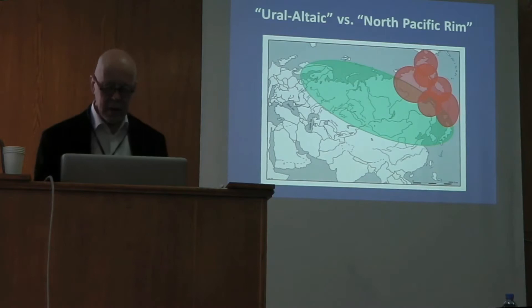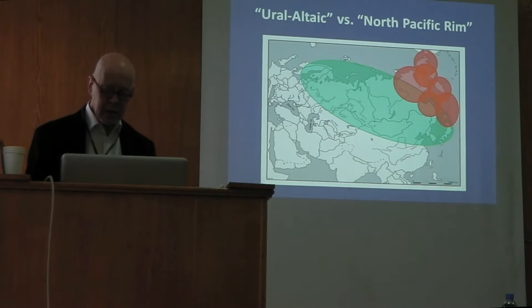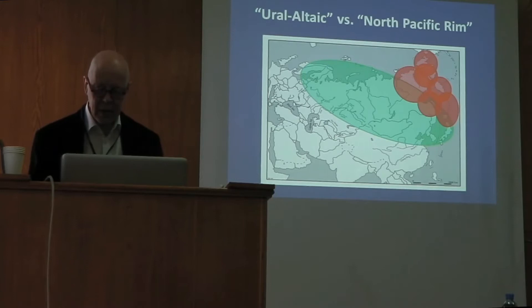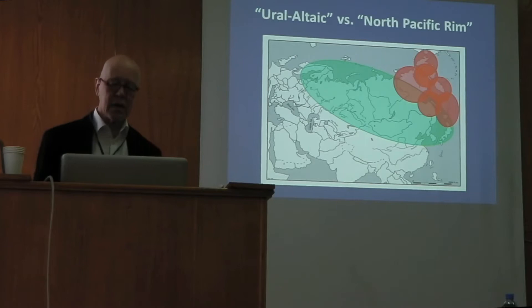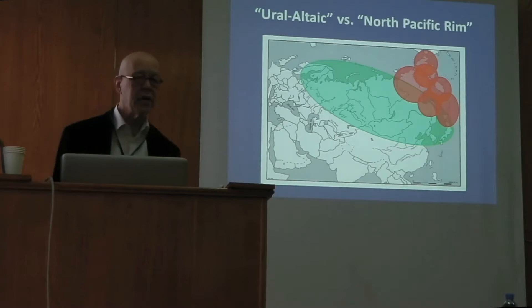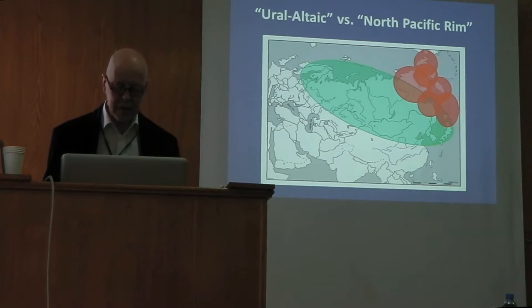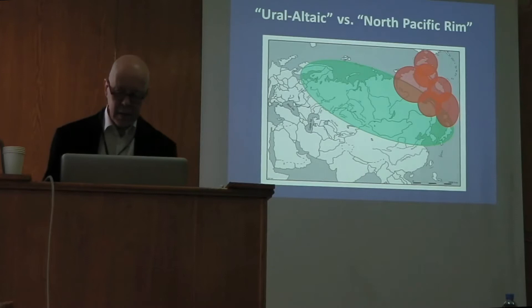These are the macroscopic zones. The green area shows the Ural-Altaic zone, which extends from central Scandinavia to the Japanese islands. We also have some North Pacific Rim languages in Northeast Asia, also known as Paleo-Siberian or Paleo-Asiatic. They have much less in common typologically than the Ural-Altaic languages, which are very similar all along this big belt, suggesting the Ural-Altaic typology has been expansive.